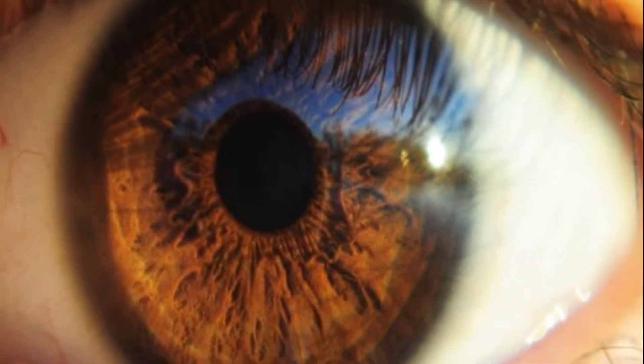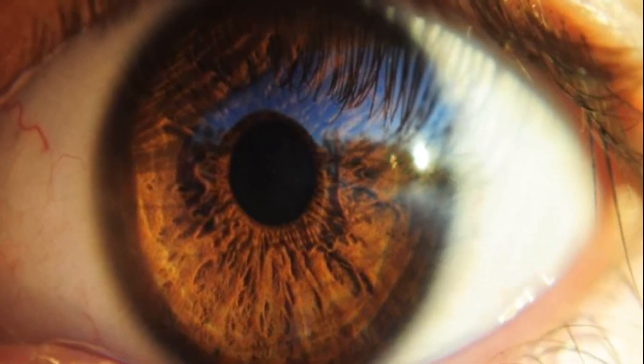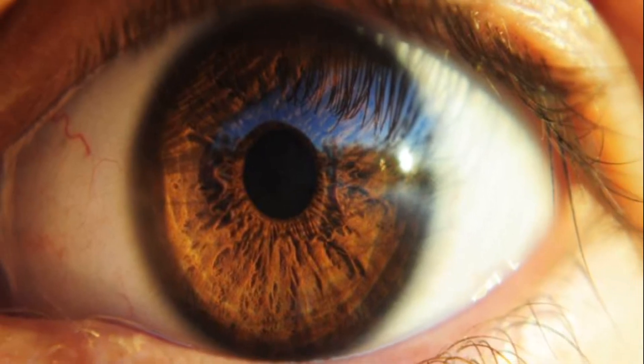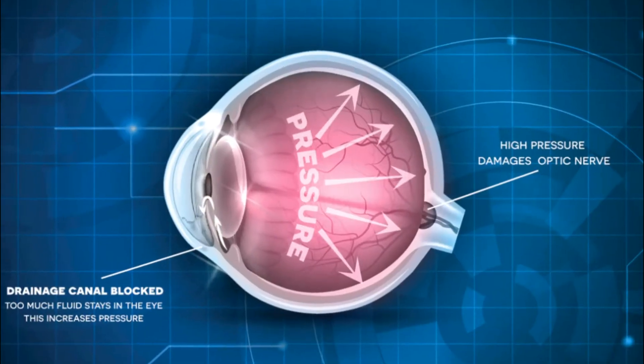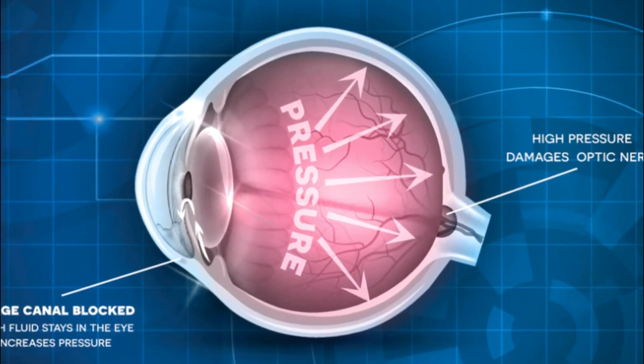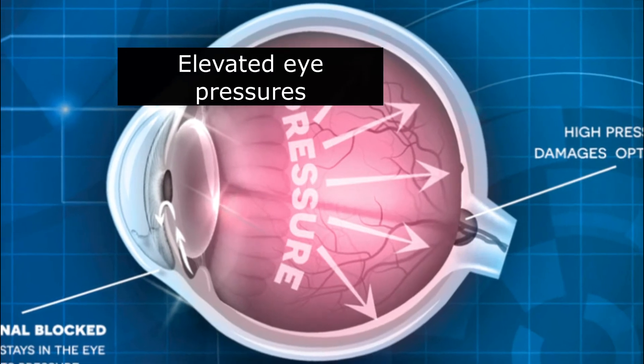Many times patients come to the clinic and get shocked that one of their eyes is completely blind or sees very little. So what then is glaucoma? It is a triad, and by triad I mean it is composed of three things.